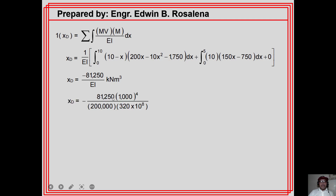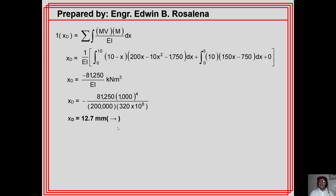Converting from kN·m³ to N·mm³ and dividing by EI, we get −12.7 mm. The negative sign means the assumed direction (to the left) is incorrect. The correct horizontal displacement at D is 12.7 mm directed to the right. Note that if your assumed direction is wrong, it simply results in a negative value in the computation.